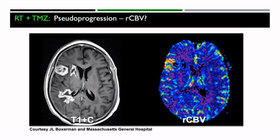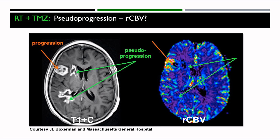This is where RCBV can provide some really important information on pseudoprogression. In this example with a patient that was treated, you have three different areas of enhancement. If you look at the corresponding RCBV map, there's one area with a high level of RCBV and not so much in the other two areas. In fact, the tissue confirmed that this was true progression and the other two areas were pseudoprogression. So here's a good indication that RCBV can be very useful.